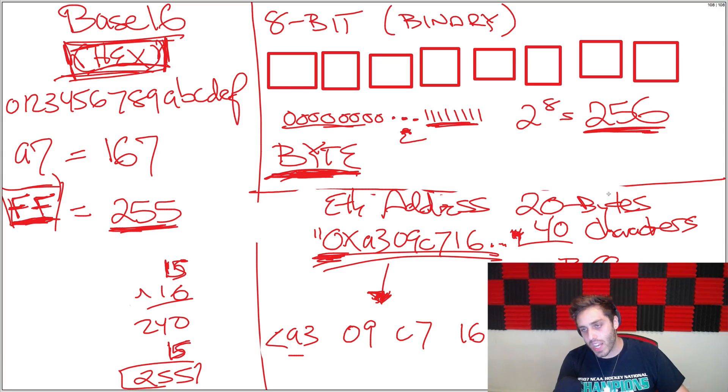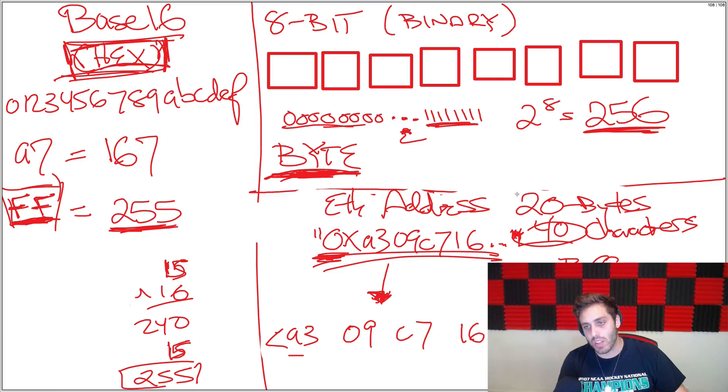Anyway, that was a quick answer to why the length of strings is always double the amount of bytes in Ethereum. I hope that that's helpful.